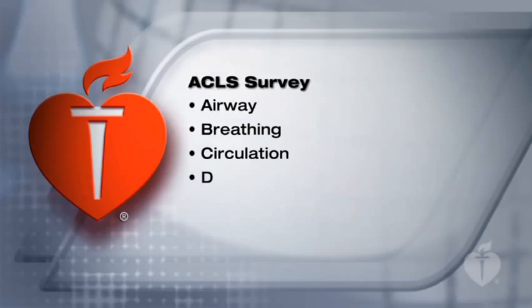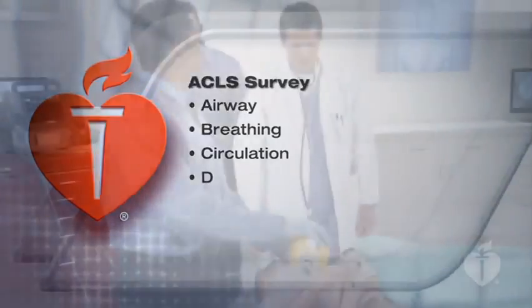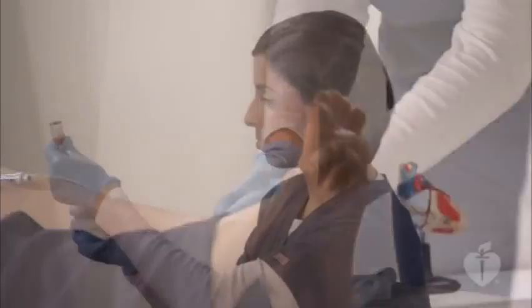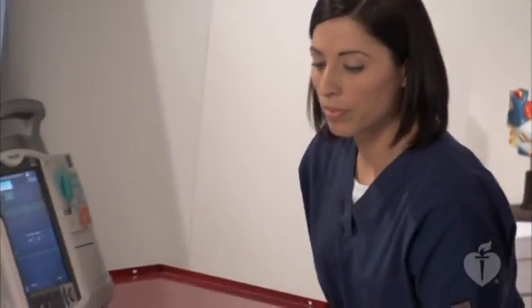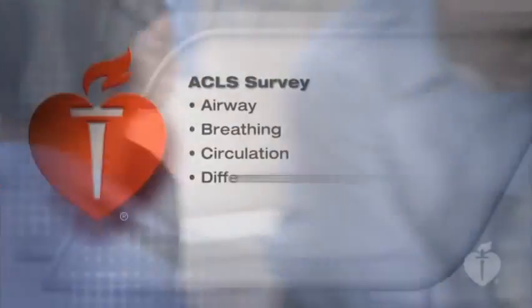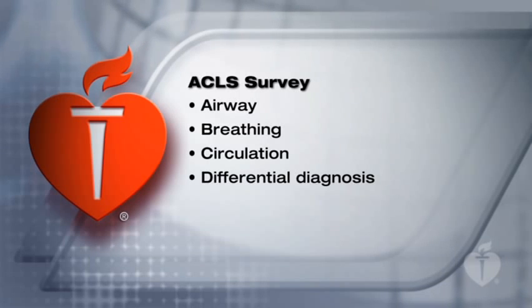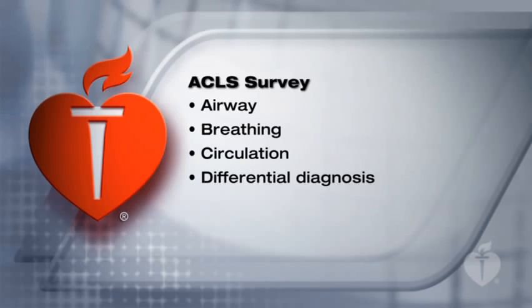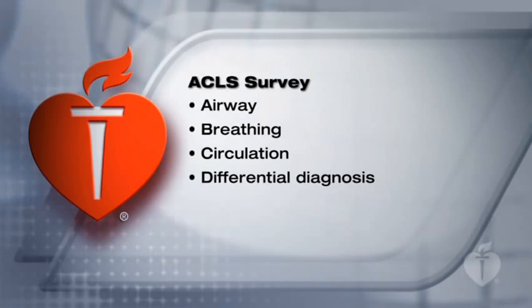C involves supporting the patient's circulatory status. Attach ECG leads, obtain intravenous or IV access or intraosseous or IO access, and give appropriate drugs to manage rhythms. Finally, D stands for differential diagnosis — search for and treat reversible causes or symptoms by reviewing the H's and T's. Although these steps are listed in progressive order, the resuscitation team often performs them simultaneously.